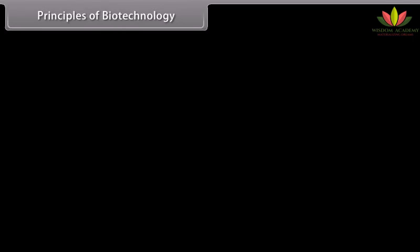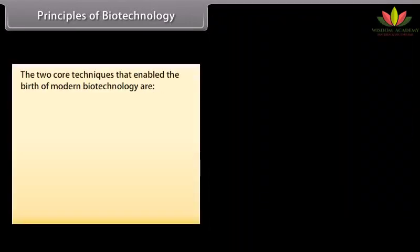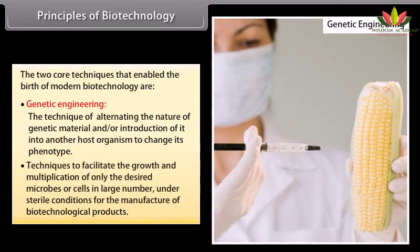Principles of biotechnology. Biotechnology is a technique that uses living organisms to make or modify products to improve plants or animals or to develop microorganisms for specific use. The two core techniques that enable the birth of modern biotechnology are genetic engineering — the technique of altering the nature of genetic material or introducing it into another host organism to change its phenotype — and techniques to facilitate the growth and multiplication of only desired microbes or cells in large numbers under sterile conditions for the manufacture of biotechnological products.